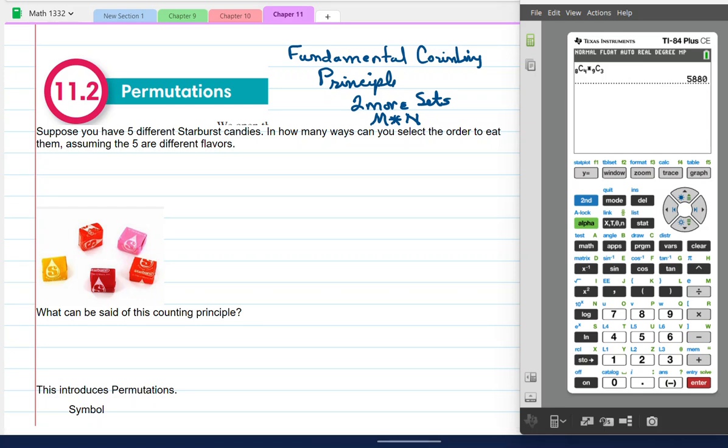So here, let's start off this one with some Starburst candies and we have five different ones. We have a yellow, a red, pink, this is supposed to be orange. And we're going to call that one purple. They're all different. And in how many ways can we order to eat them, assuming five are different flavors?